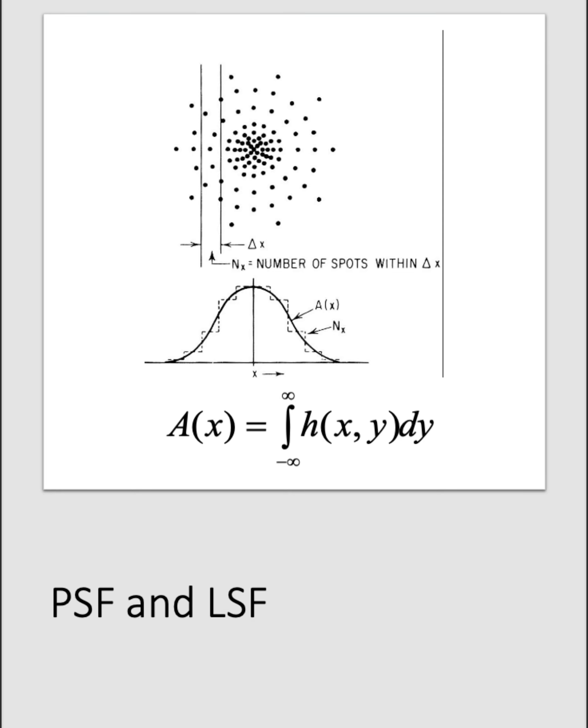First off, it's important to recognize that a spot will be imaged to a blur in an optical system, whether that's because of diffraction effects or because of aberrations in the system. This is often represented as a point spread function. If we integrate across the point spread function, we can get another function called the line spread function. This characterizes the amount of power that's distributed across one axis due to imaging a point.